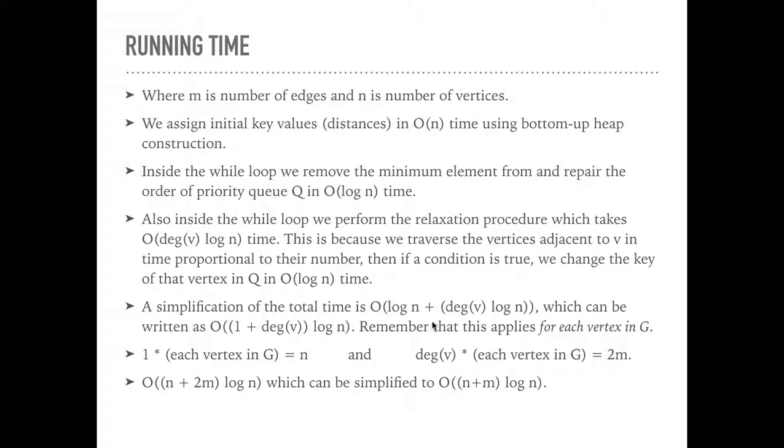And so we can use a little bit of math, a little bit of factoring here to simplify this to O((1 + degree v) log n). We just factored out like a log n here. And then we have to remember that this applies for each vertex in G. It's not for the whole algorithm. This is for each vertex. It's log n to remove the min, right? And then log n to, or degree v log n to do the relaxation. That's happening every vertex, each step that we did in that image.